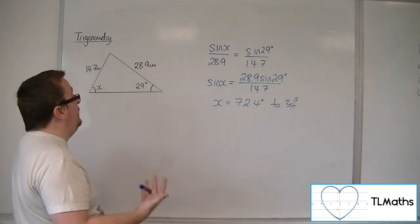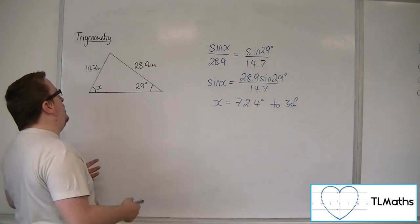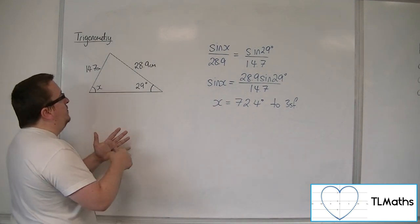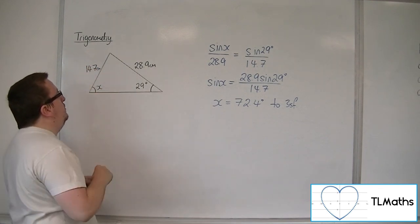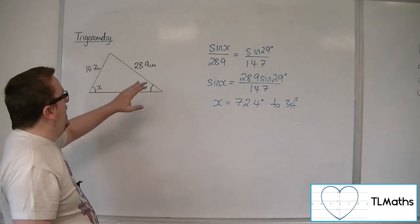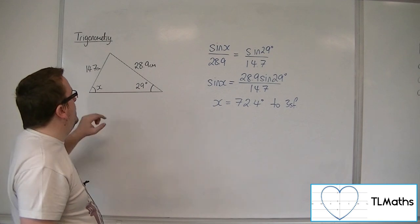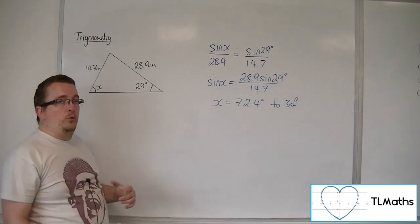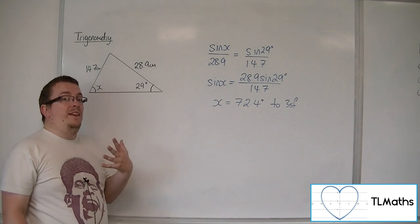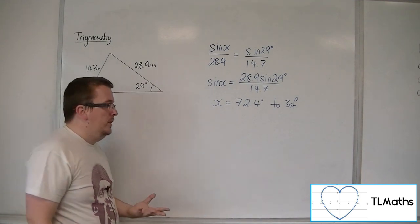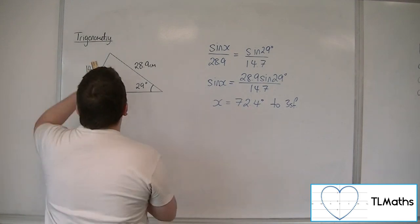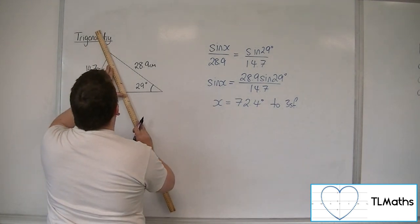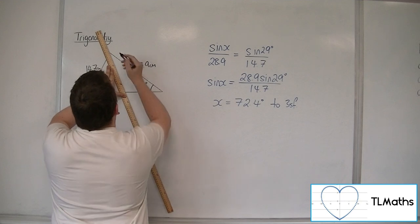But, if I just said that it was a triangle that had an angle of 29 degrees and an opposite side of 14.7, and it had this other side of 28.9, and it was the opposite angle that you wanted to find, that isn't actually enough to draw it, because I could have drawn the triangle like this.